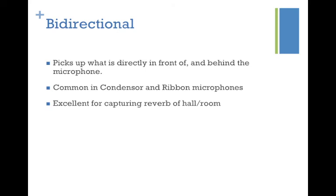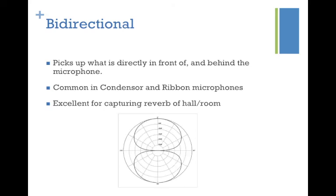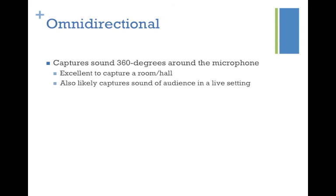Bi-directional, or figure-eight, picks up what is directly in front of and behind the microphone. If you turn it 90 degrees, it captures everything to the left and right. The name 'figure-eight' comes from the pattern shape when picking up front and back. This pattern is seen in some condenser and ribbon microphones, and is excellent for capturing the sound of a hall or room. If you're recording in a large hall, a bi-directional mic can capture some of the reverb from the space, helping the listener feel like they're in that environment.